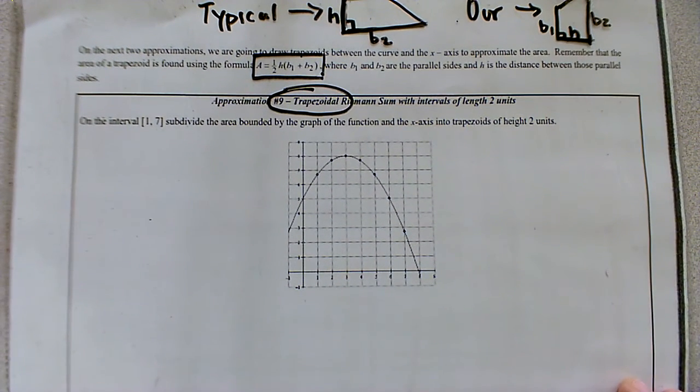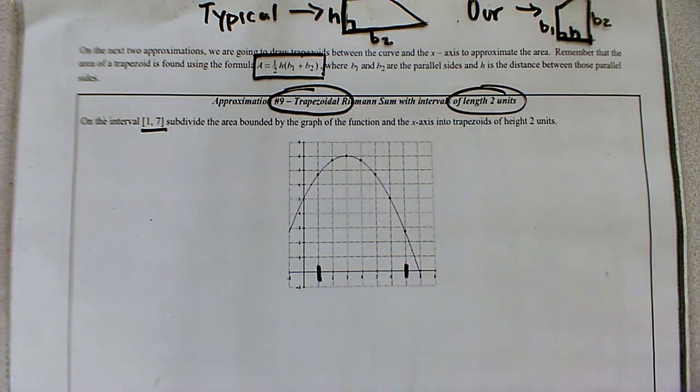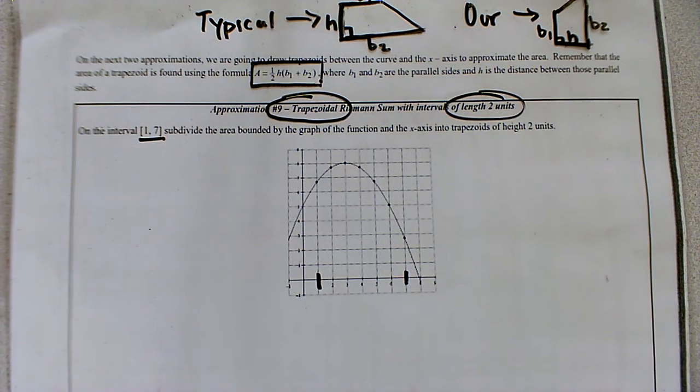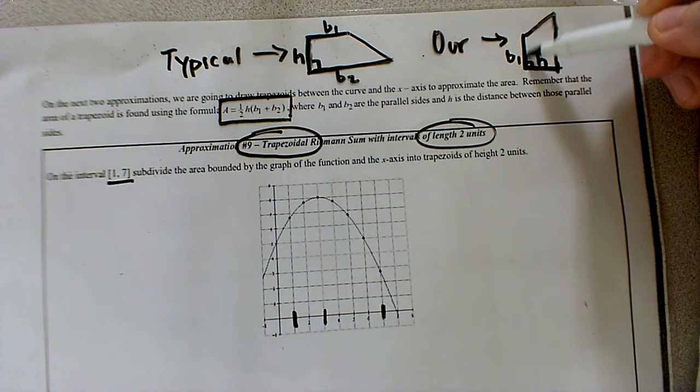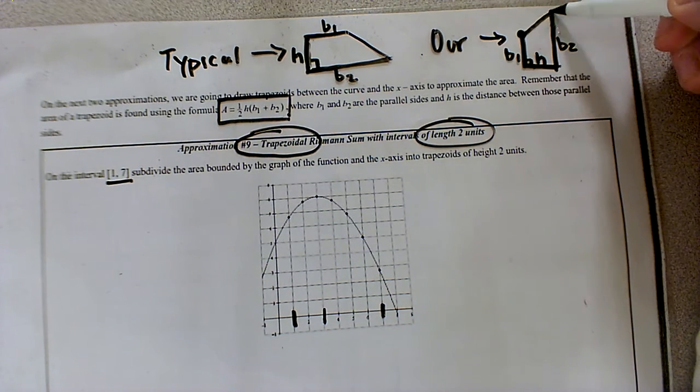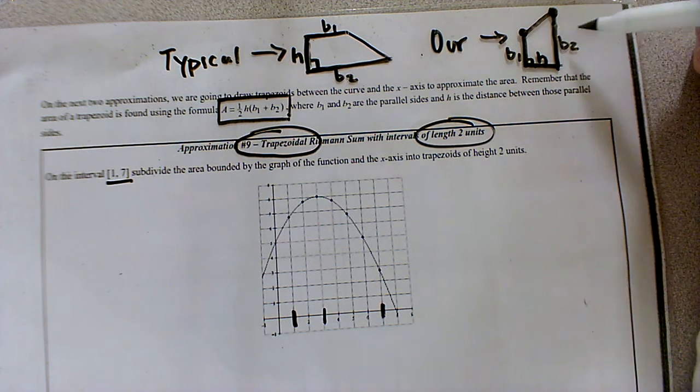Now we're going to take a look at the same function as before, and we're still going from one to seven. And in this case, we want to use lengths of two to draw in our trapezoids. So start at one, length of two would mean we end at three. Notice how the trapezoid is drawn straight up on either side to create those bases.